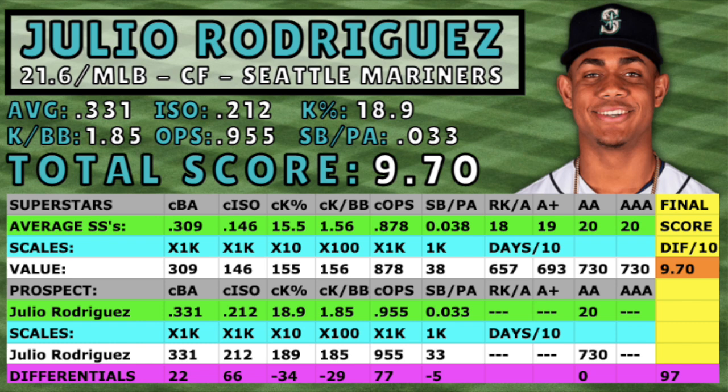I totaled the purple differential bar and divided it by 10 to accrue a score for each prospect — the higher the number the better, and some scores do go into the negative. Assume all of the superstars' scores would be zero: the further above zero the better, and the further below zero the worse. Julio Rodriguez's final score is a 9.7, which indicates his career numbers were 9.7 points better as a whole than the superstars. If you're still confused, just follow the scores.